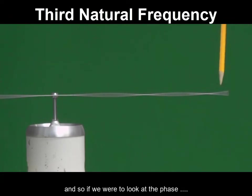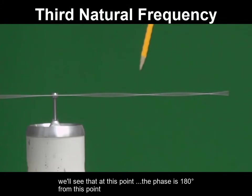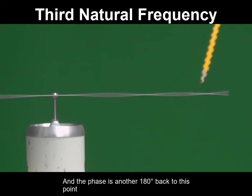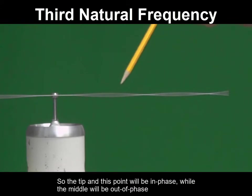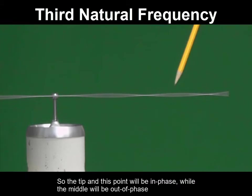And so if we were to look at the phase, we'll see that at this point, the phase is 180 degrees from this point, and the phase is another 180 degrees back to this point. So the tip and this point will be in phase, while the middle will be out of phase.